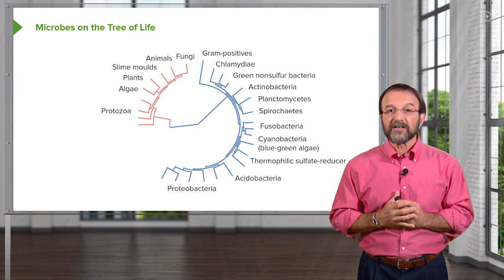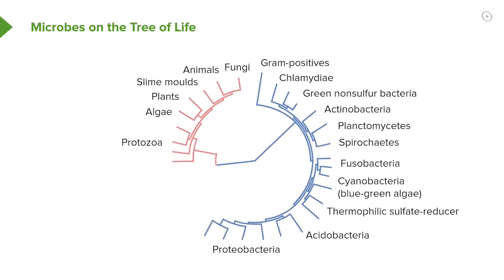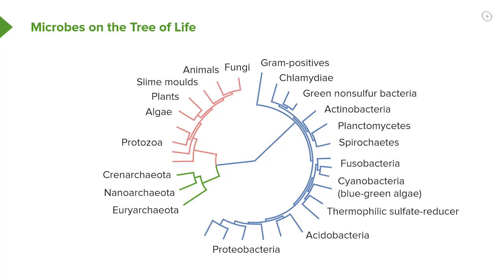Now let's add the eukaryotic microbes and other eukaryotes we've discussed — the protozoa, algae, plants, animals, and fungi. You can see they form a separate branch on the tree of life and are more related to each other than they are to the bacteria. Finally, let's add the archaea, shown in green. They form a separate branch as well. So all three groups — bacteria, eukaryotes, and archaea — arose from a common ancestor billions of years ago and have diverged and become very different over time.